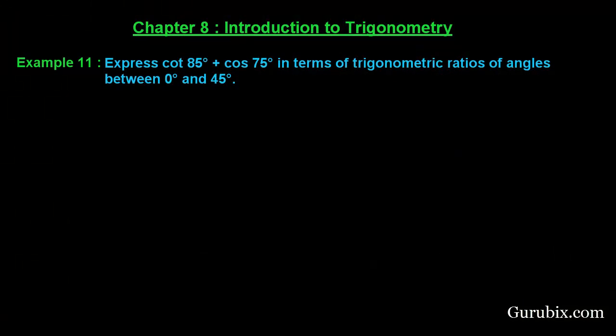Welcome friends. Let us solve example number 11 of Chapter 8. The example says: Express cot 85° + cos 75° in terms of trigonometric ratios of angles between 0° and 45°.